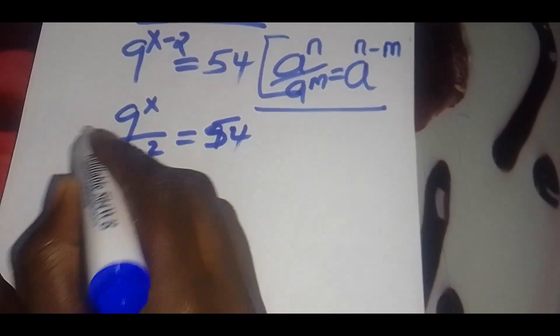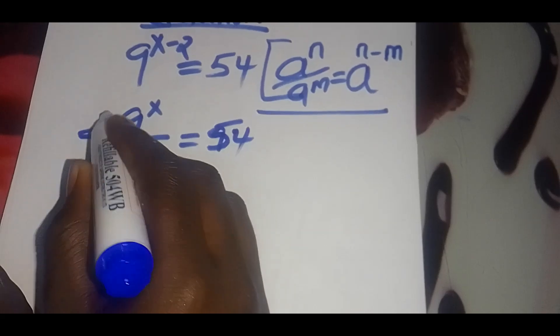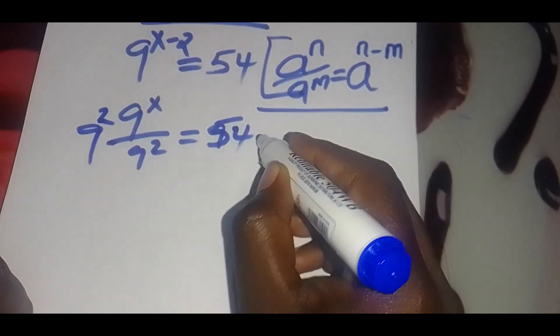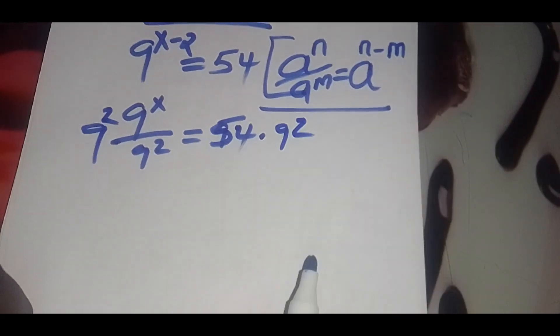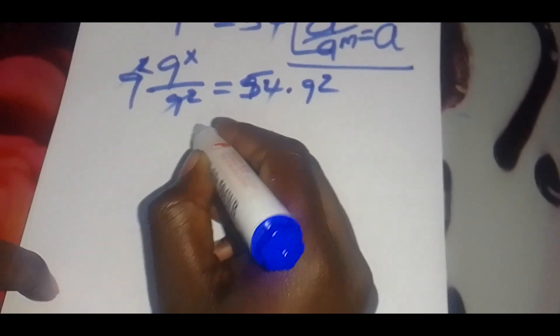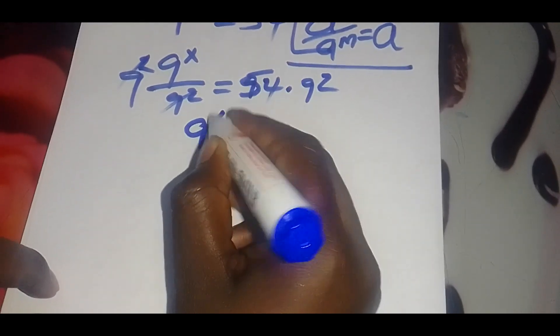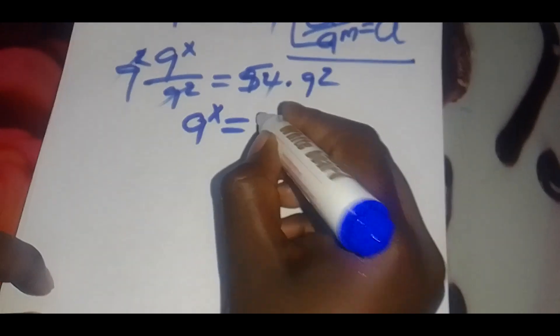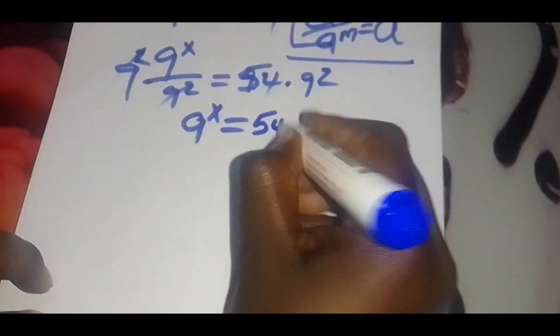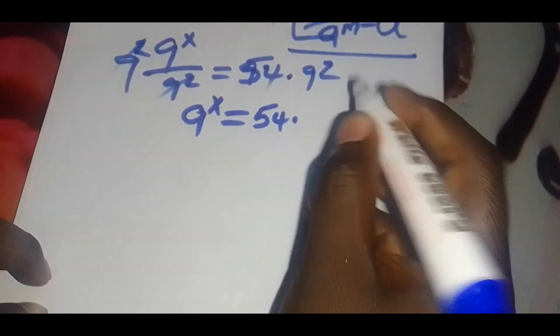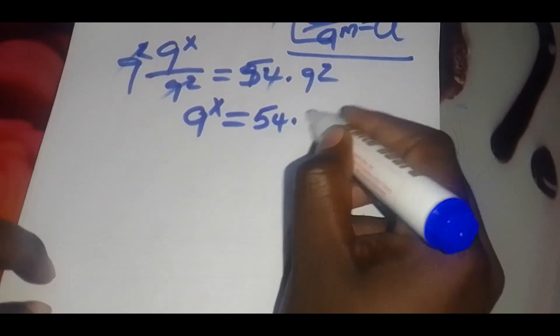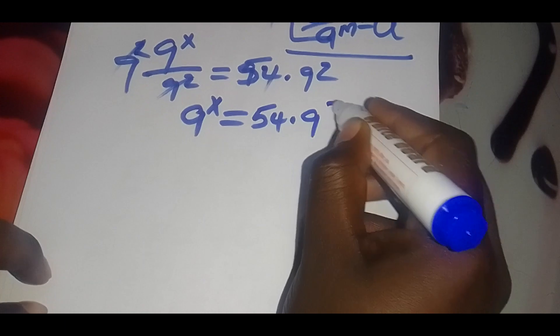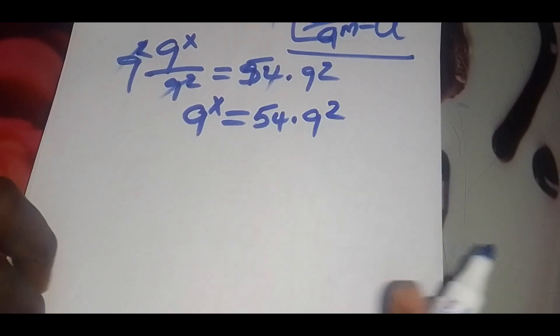Multiplying both sides by 9 raised to the power 2, so this is equal to 9 raised to the power x, this is equal to 54 multiplied by 9 raised to the power 2.